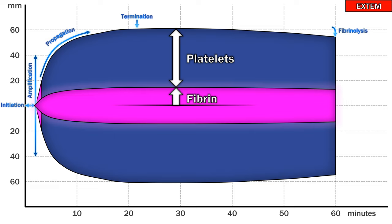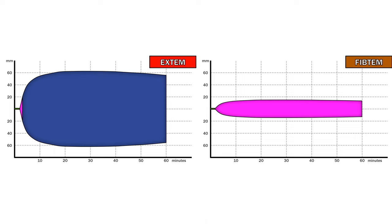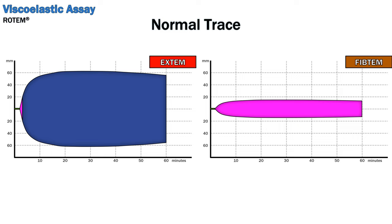We can demonstrate this with a second ROTEM assay, the FIBTEM. FIBTEM is simply EXTEM with the addition of a potent platelet inhibitor, cytochalasin D. This is an example of normal traces for both EXTEM and FIBTEM. The FIBTEM is pink because the amplitude doesn't reach 20mm, which is typical. It's more important to learn to spot particular patterns than to memorize specific measurements.